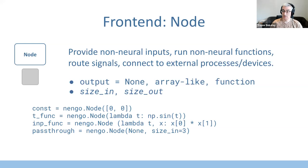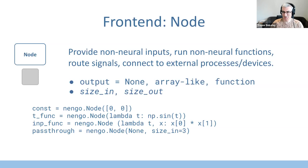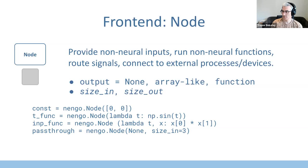Nodes are kind of the reason Nengo has been able to do a lot of what it does — a node essentially runs an arbitrary Python function, which wasn't easy to do in previous versions. You can kind of do anything with nodes, and it's been surprising how much people have done with them. Typical use cases: providing non-neural inputs to a simulation, running functions you don't want to implement with a neural network, routing signals between different parts of your model, or connecting to external processes and devices.